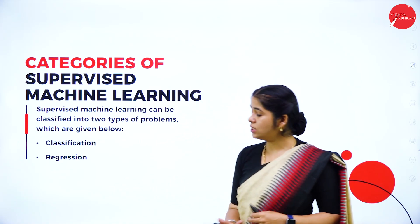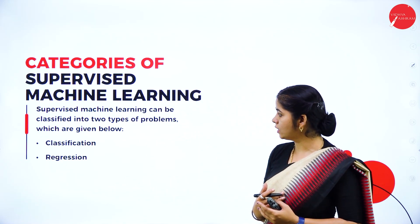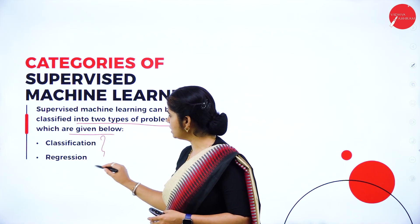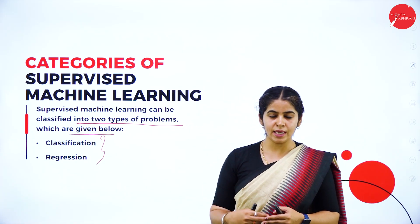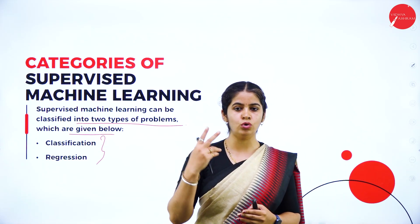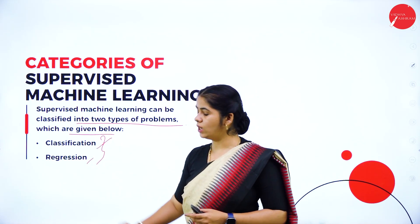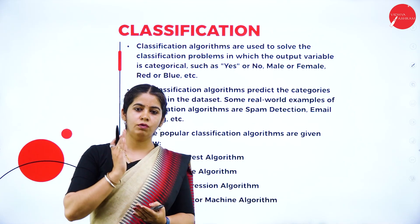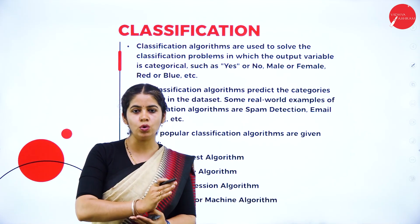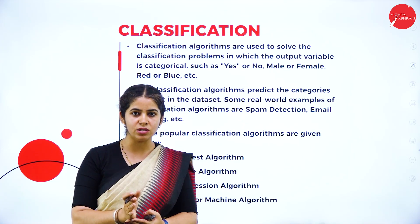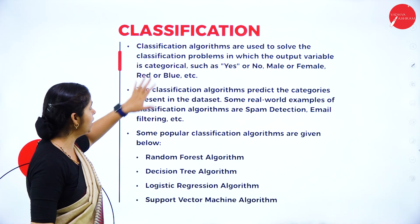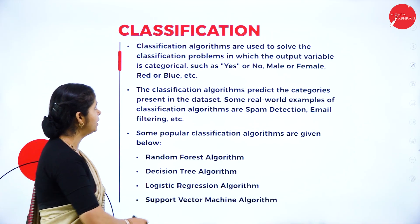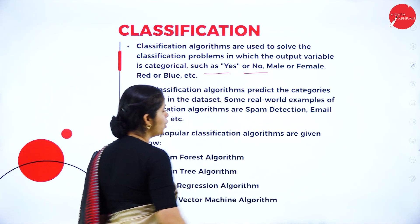Next, categories of supervised machine learning: we have two categories, classifying it into two types of problems — classification and regression. We can give the supervised training in two forms: classification and regression. Classification means you are categorizing something — whether it is true or not. Classification algorithms are used to solve classification problems in which the output variable is a category, such as yes or no.